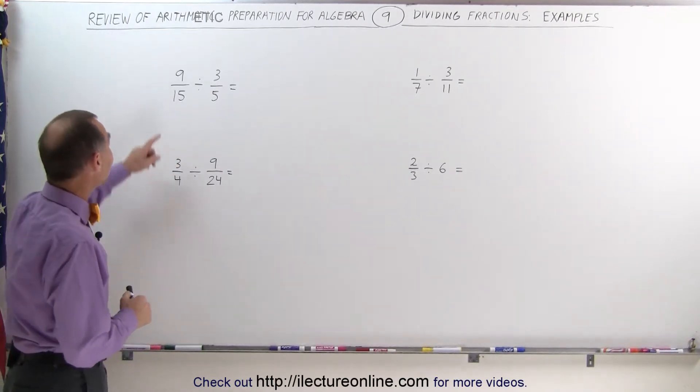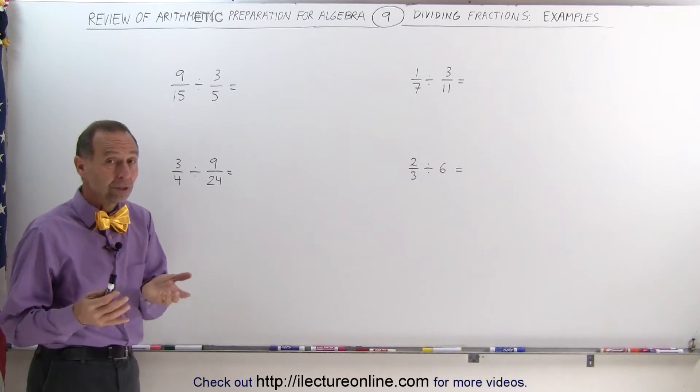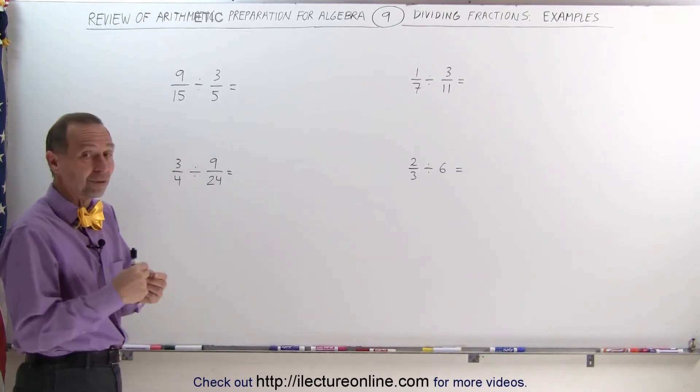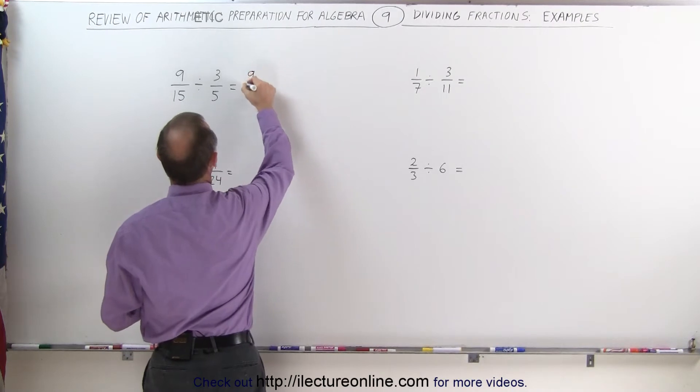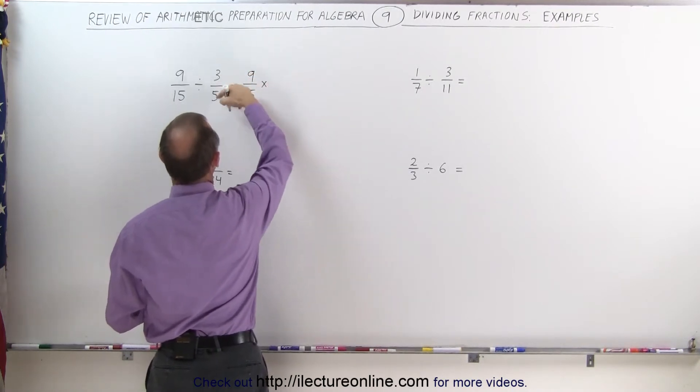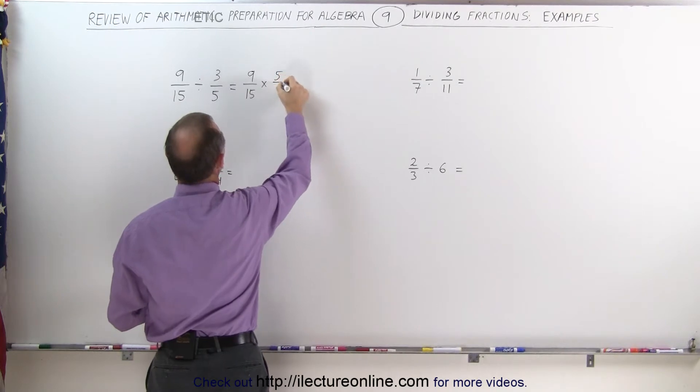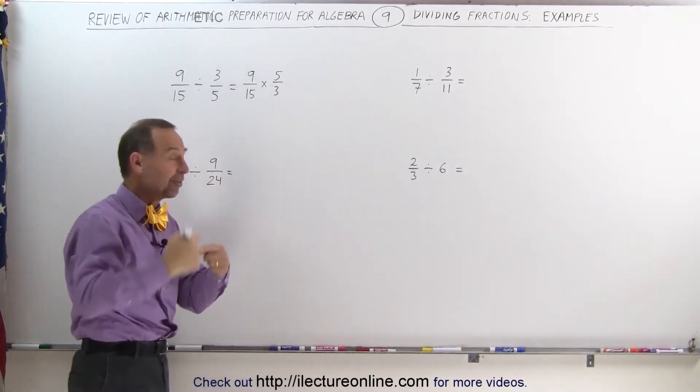The first one is 9/15 divided by 3/5. And again, the rule is when you divide by a fraction, it's the same as multiplying by its inverse. So this becomes 9 over 15 multiplied times the inverse of 3/5, which is 5 over 3. All you do is simply flip the fraction around.